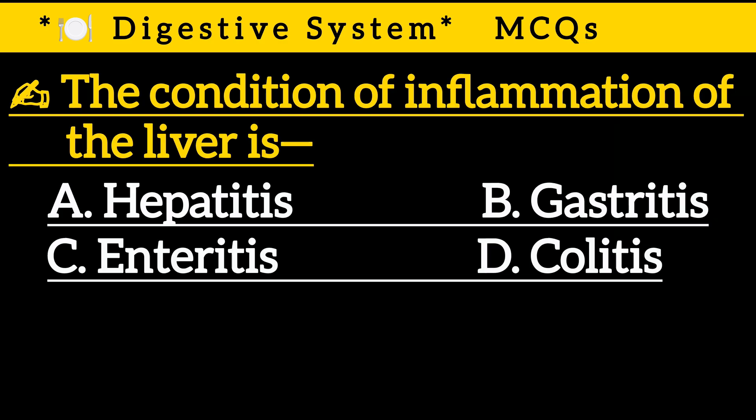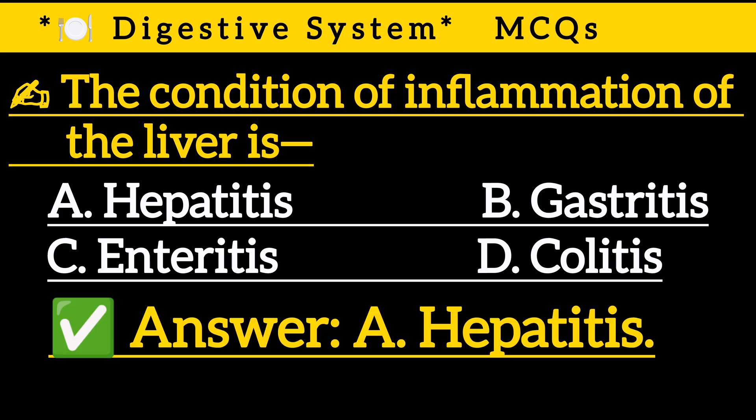Question 19: The condition of inflammation of the liver is — Option A: Hepatitis, Option B: Gastritis, Option C: Enteritis, Option D: Colitis. Correct answer is Option A: Hepatitis.